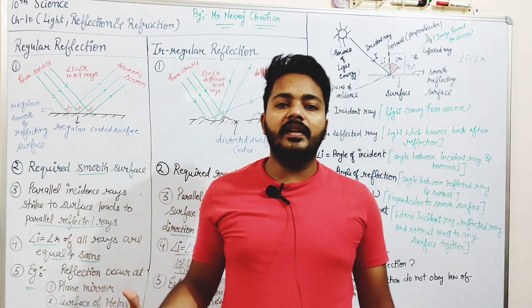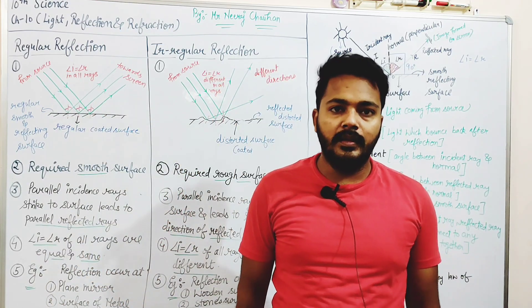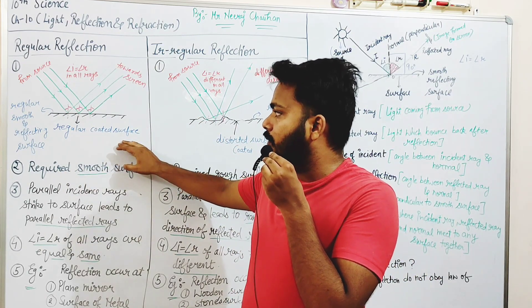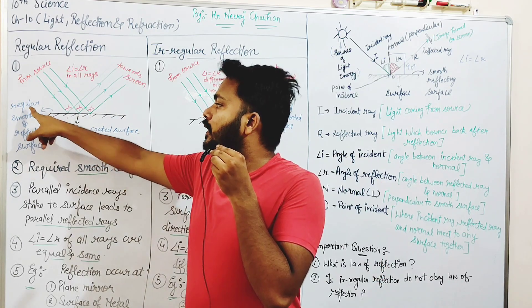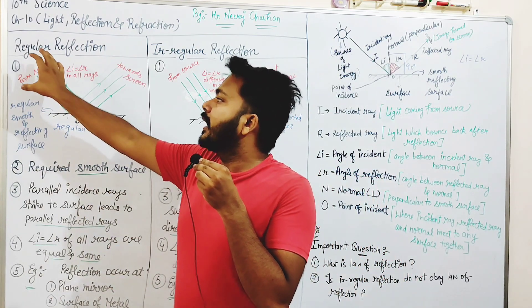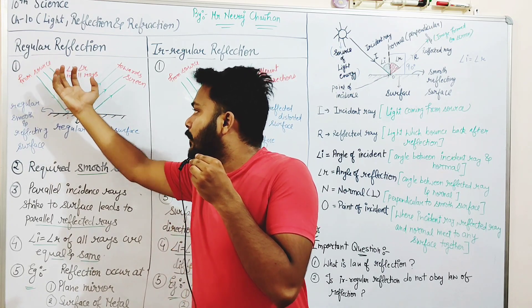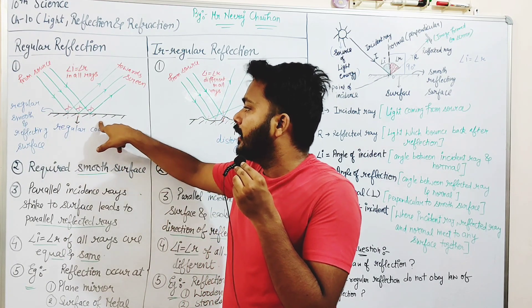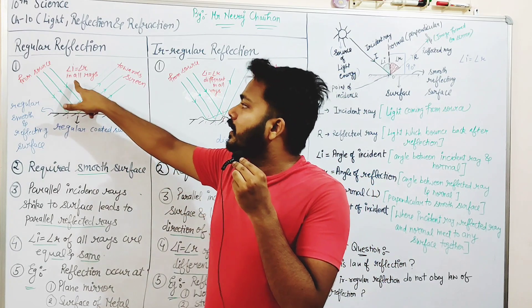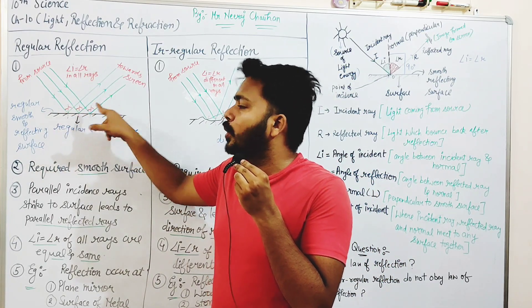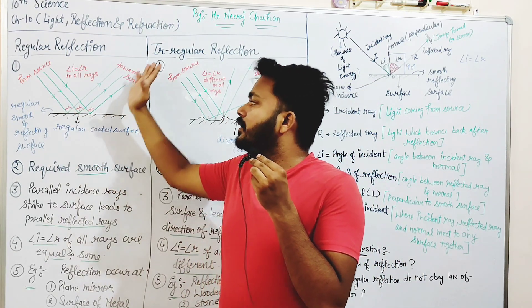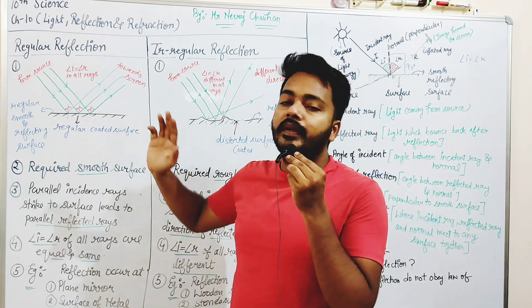Now let's see the difference between regular and irregular reflection. For regular reflection, a smooth reflecting surface is required. When parallel rays from a source fall on a smooth surface, they return back and fall on the screen. Angle I and Angle R are similar in all cases, and both the incident rays and reflected rays are parallel. This is the case of regular reflection.